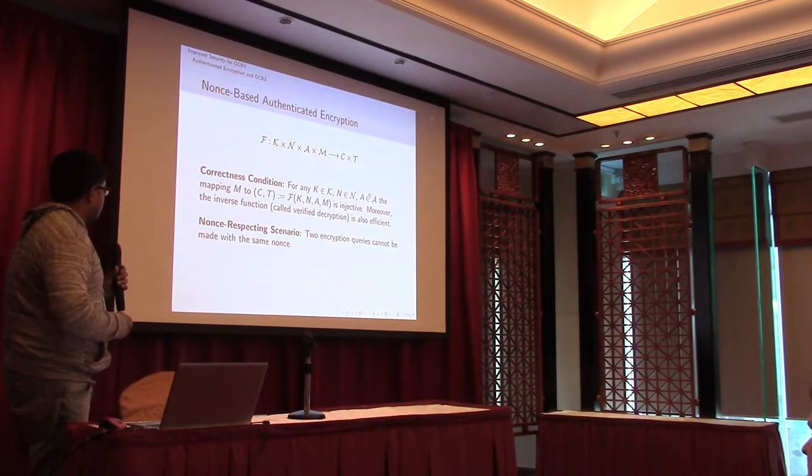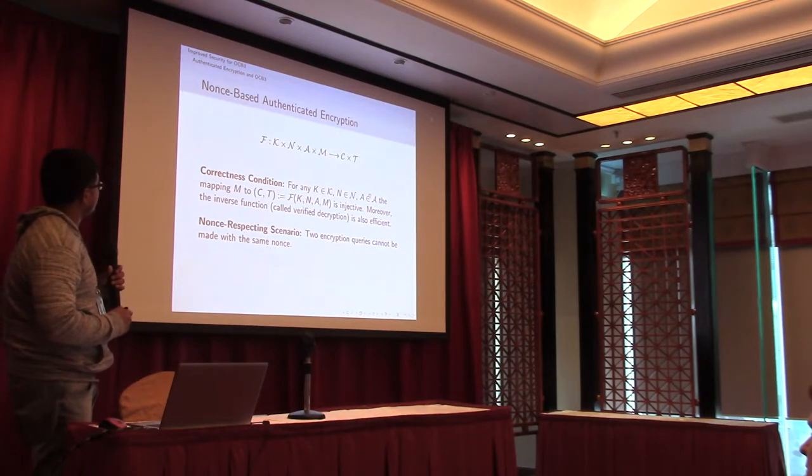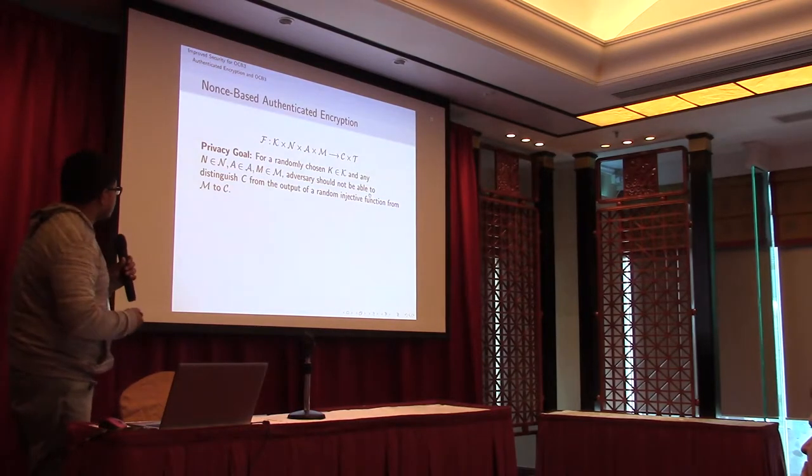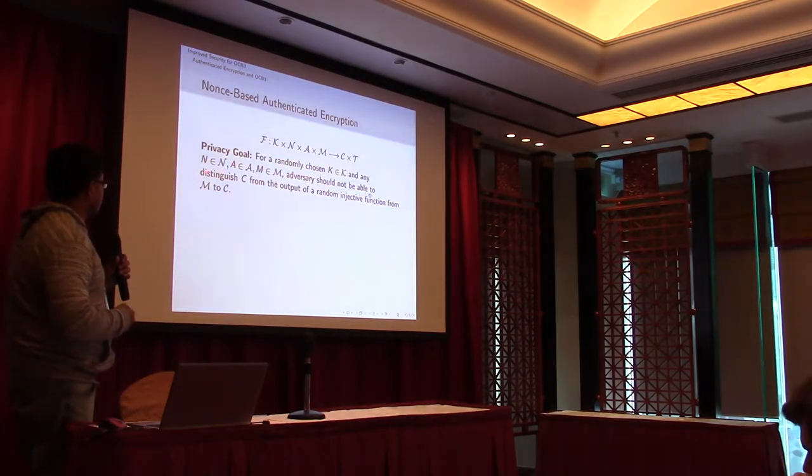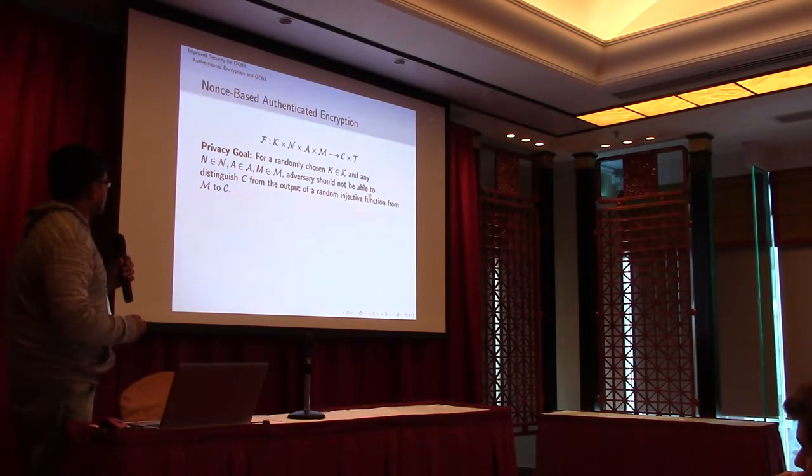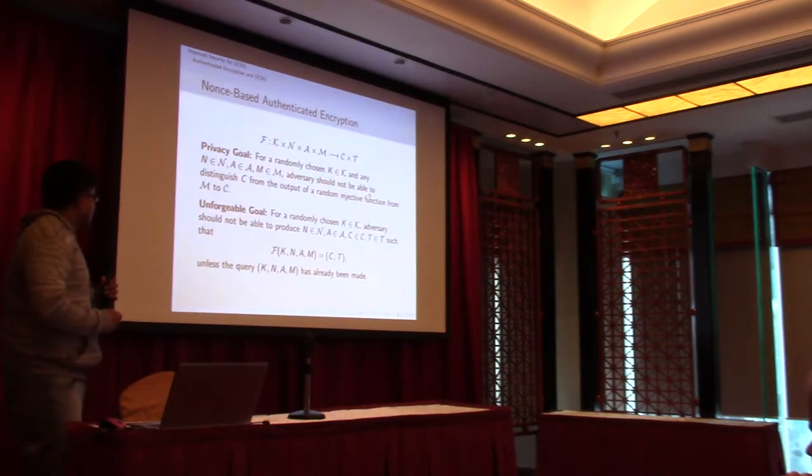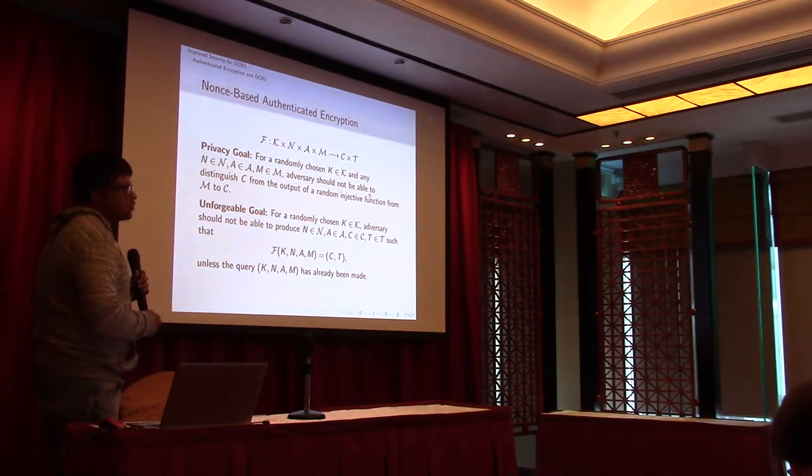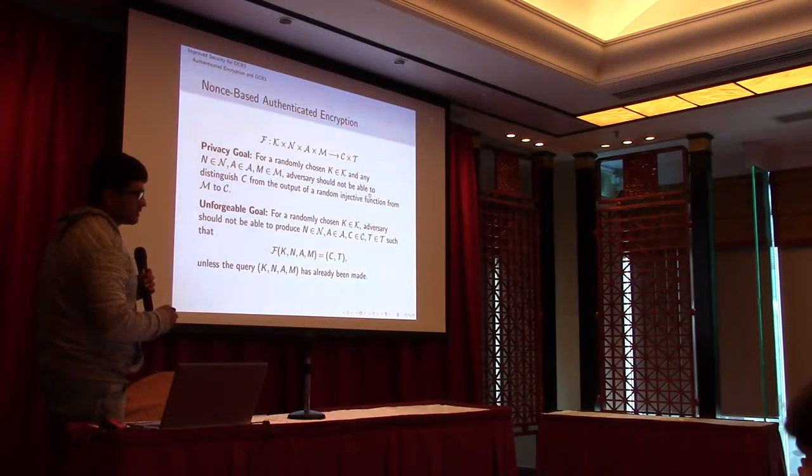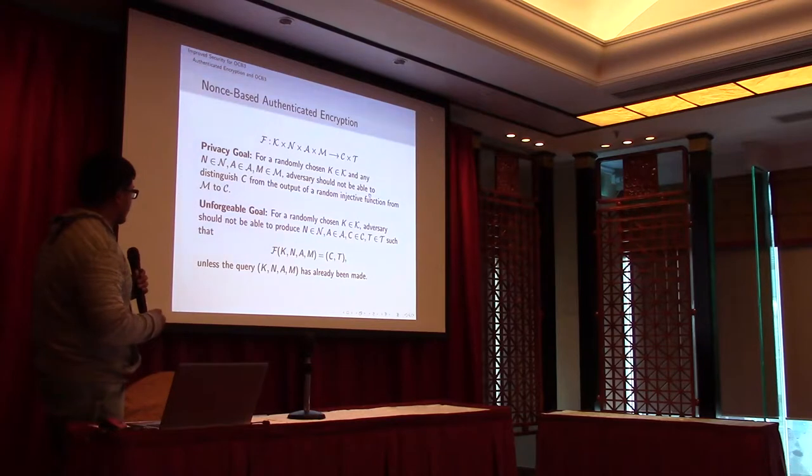And as we have said, in the nonce-respecting scenario, two encryption queries cannot be made with the same nonce. And now, as this is an authenticated encryption scheme, we have a privacy goal which says, for a randomly chosen key and any nonce, associated data or message, the adversaries should not be able to distinguish the ciphertext from the output of a random injective function. So basically the ciphertext should look random. And we also have the unforgeability goal, which says it's hard to forge this authentication scheme. Unless we have made that corresponding query, you won't be able to produce a ciphertext and a tag such that it will pass the verification.